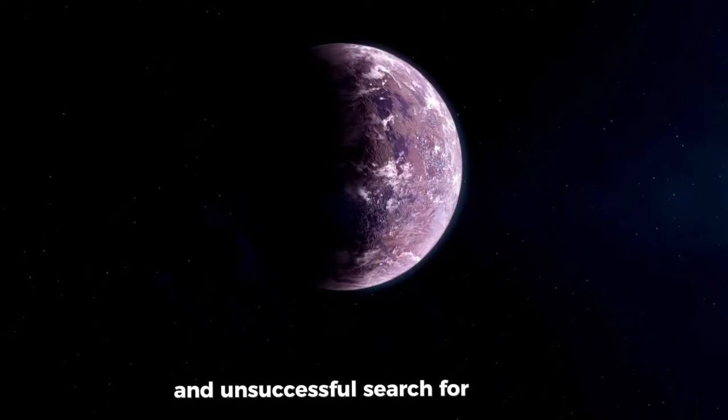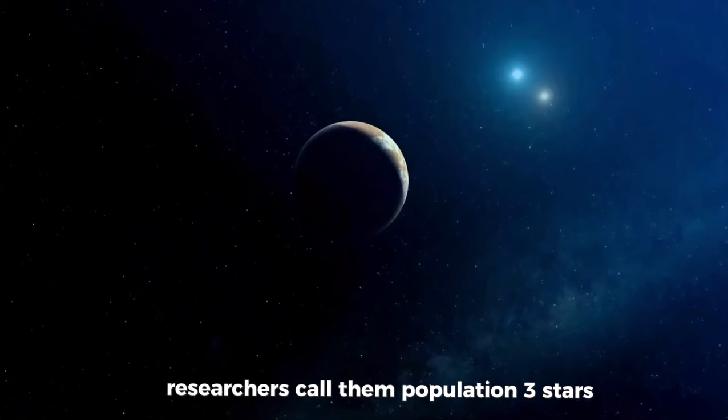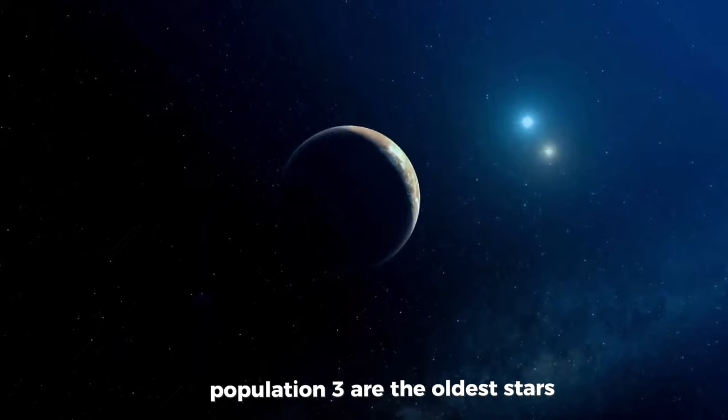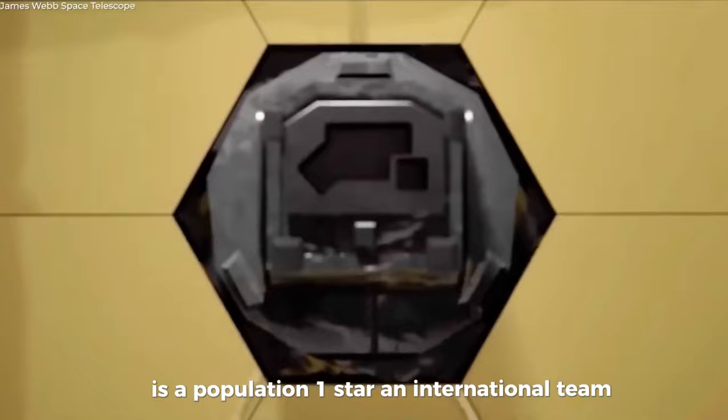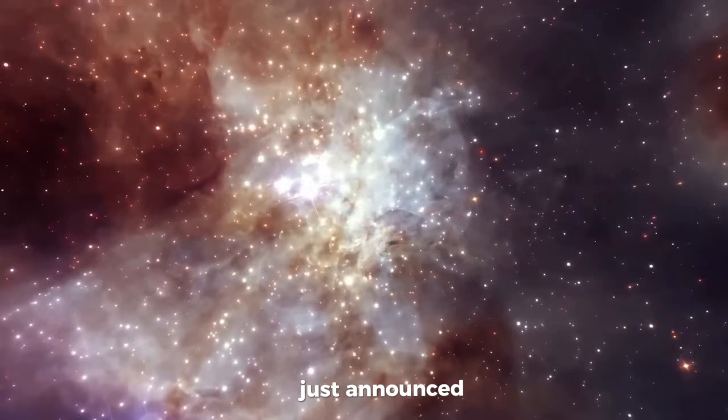Researchers call them Population 3 stars because sometimes astronomers name things in reverse. Population 3 are the oldest stars, Population 2 are in the middle, and Population 1 are the newest. Our Sun, which is 4.6 billion years old, is a Population 1 star. An international team just announced that they have found the first evidence of Population 3 stars with the help of James Webb.